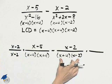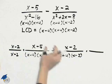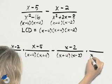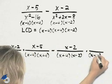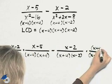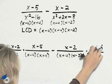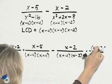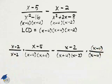For the second fraction, we have x plus 4, x minus 2. We need x minus 4. And so I will multiply the numerator and the denominator times x minus 4 over x minus 4.